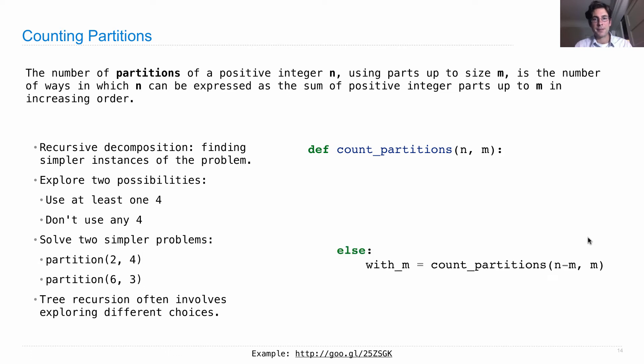So, the recursive call here is that we make a call to count partitions using a partition of size m. Now, we might use more later, but we'll use at least one. So, that means the number that's left to partition after that is n minus m, and we still have the same maximum size of a partition. Or, we can declare that we'll never use another m. So, we still have the same amount to partition n, but we've decreased m by 1 in the recursive call. So, we compute this with m, we compute this without m, and then we return the sum, forming a tree recursive process by two recursive calls, and then using both of them to compute the return value.